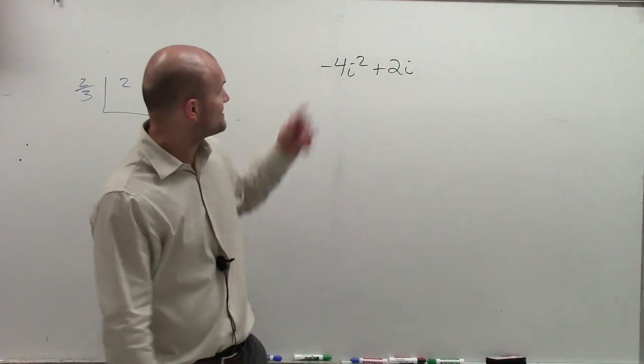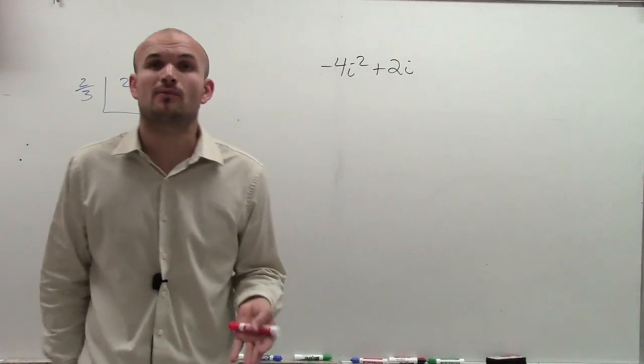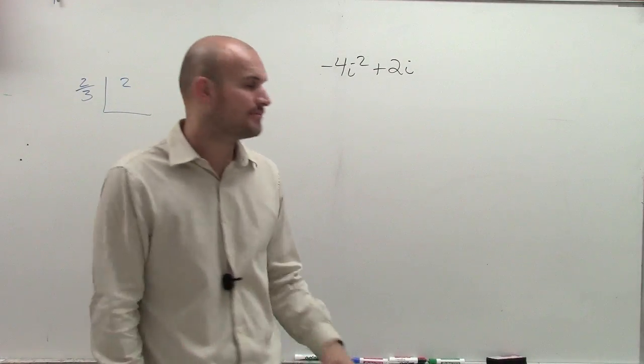OK, so here we go. What I have is negative 4i squared plus 2i. And what I want to do is I want to put that in standard form.